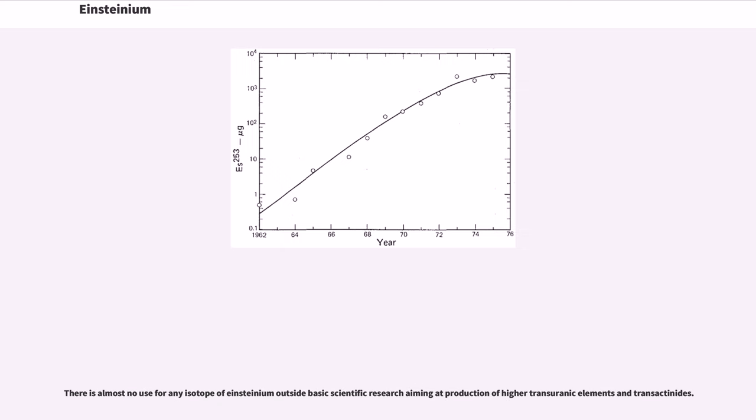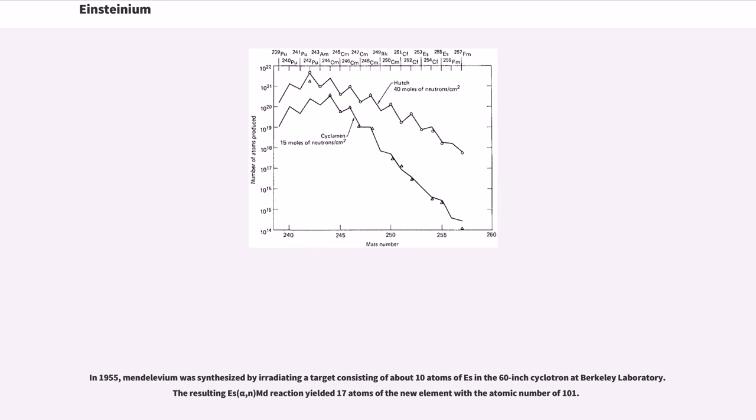There is almost no use for any isotope of Einsteinium outside basic scientific research aiming at production of higher transuranic elements and transactinides. In 1955, mendelevium was synthesized by irradiating a target consisting of about 10^9 atoms of Es-253 in the 60-inch cyclotron at Berkeley Laboratory. The resulting Es-253(alpha,n)Md-256 reaction yielded 17 atoms of the new element with the atomic number of 101.